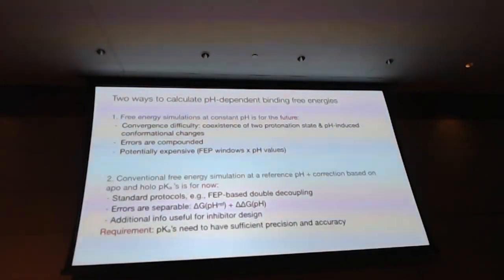All right. So what is the other approach? The simple and cheap approach that I'm going to propose to you now is to simply run a conventional FEP calculation at a reference pH, and then we're going to add a free energy correction based on two sets of pK values, the apo state and the holo state. By doing this, we can rely on the standard protocol that you guys already presented, how accurate it is. And we know that errors can be separated. So if we have errors on one side, we know what's the error bar, and then we can also have error bars for our pK calculations. And we can also get additional useful information for inhibitor design, which I will show you in a little bit. Now, only caveat here is that you need to actually have very accurate pK tool that give you both precision and accuracy.